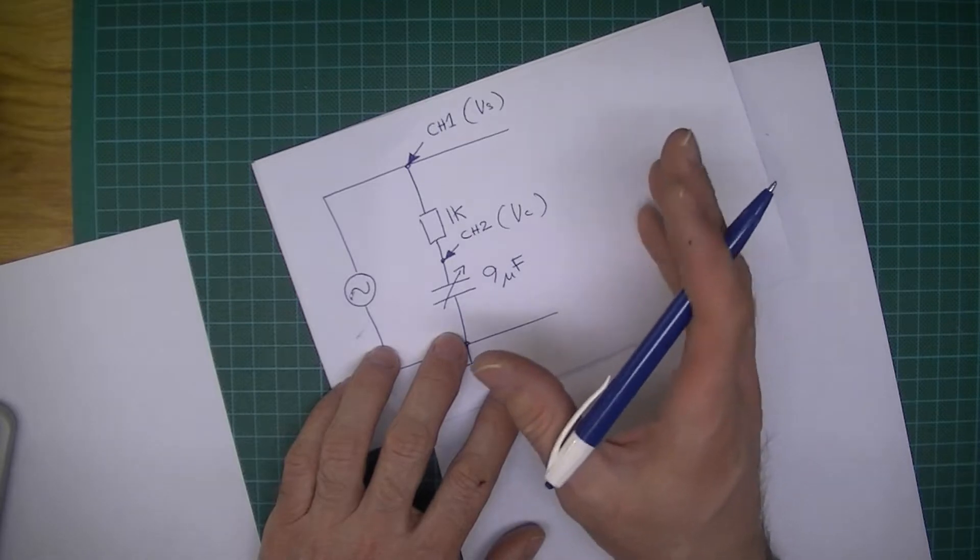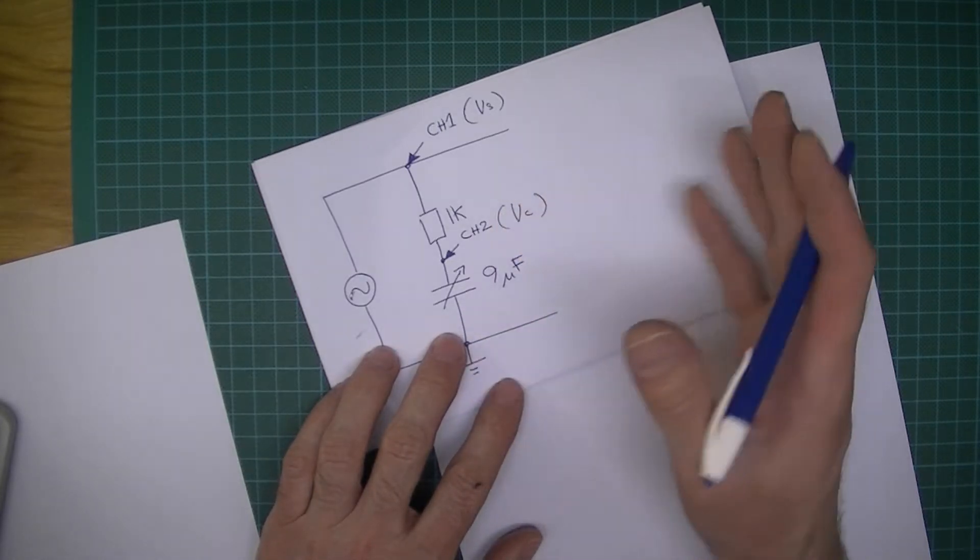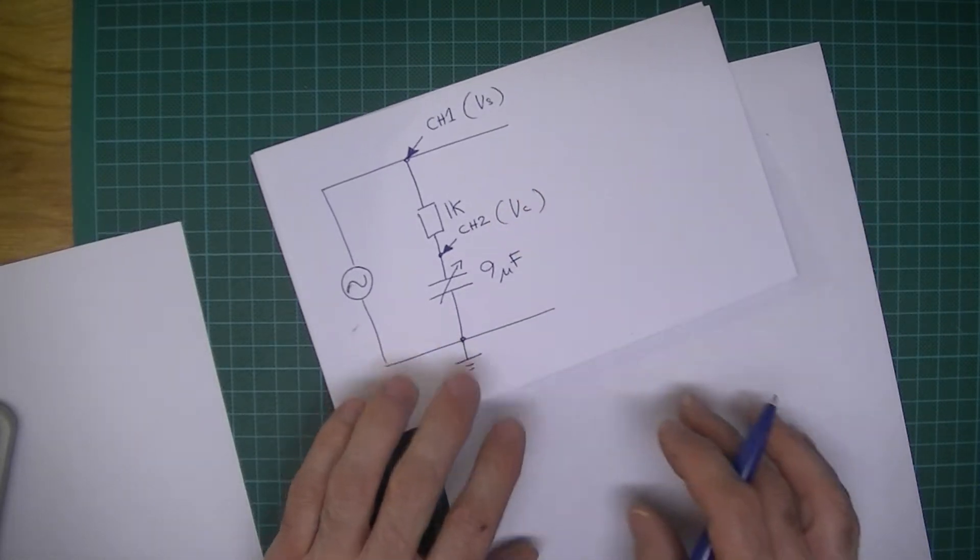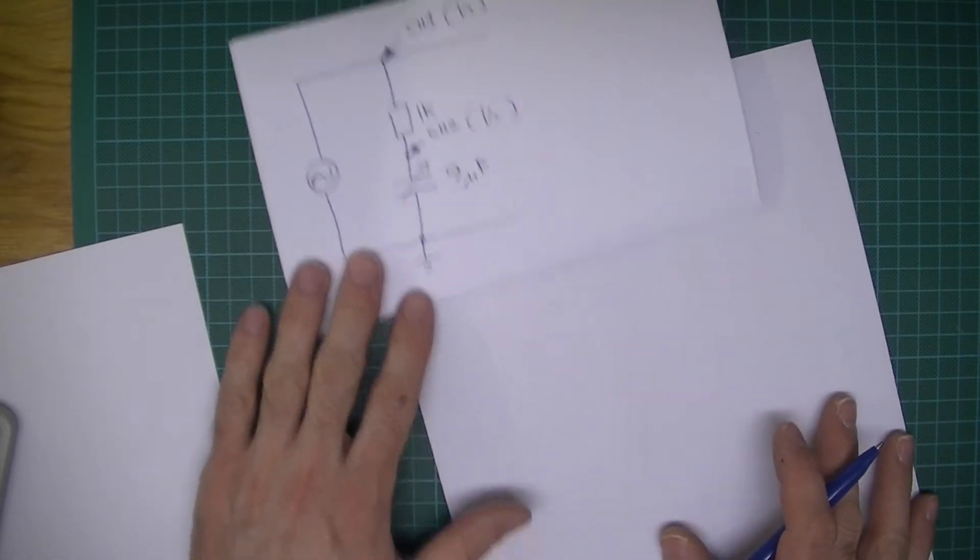It looked like something about 70 to 80 degrees, something like that. So we can calculate what this phase angle should be.